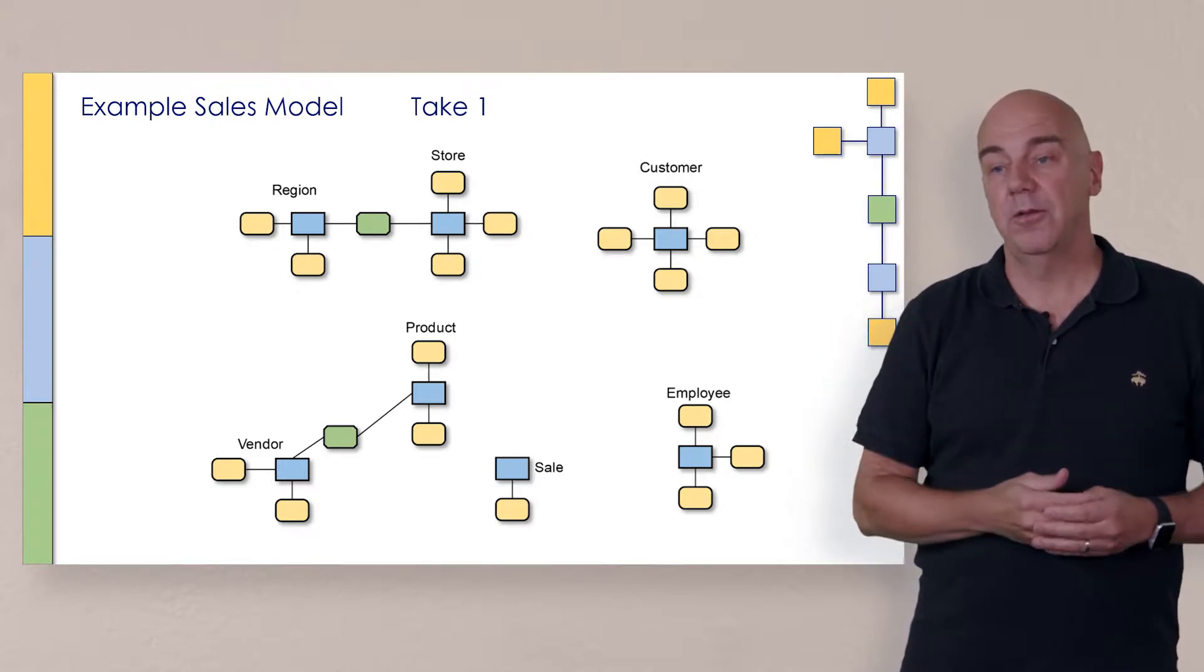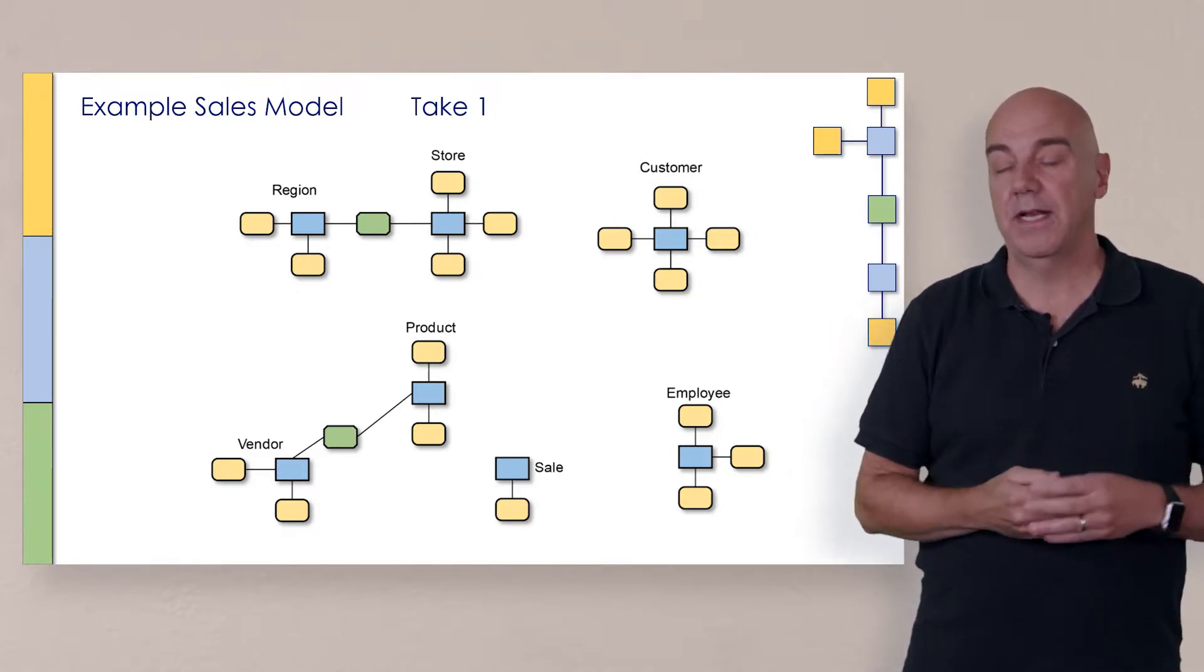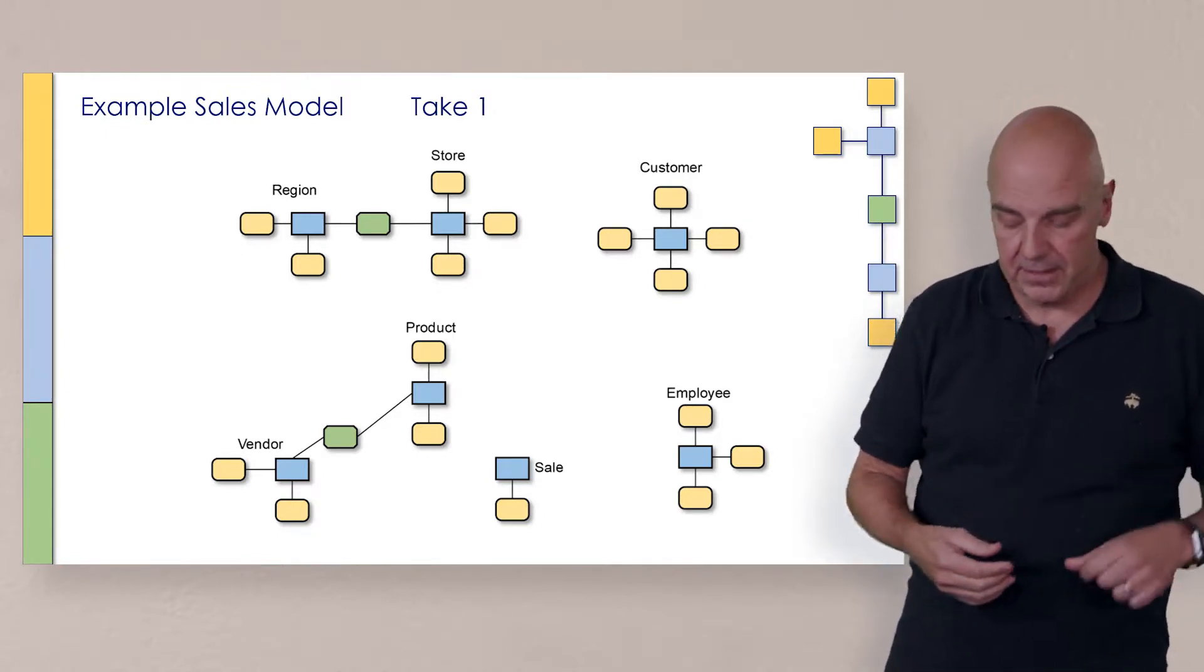But now if you look at the sale, the sale actually has a lot of things going on. It has a product, a store, customer, and an employee. Let's take a look at the whiteboard.